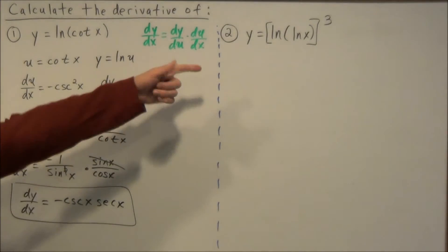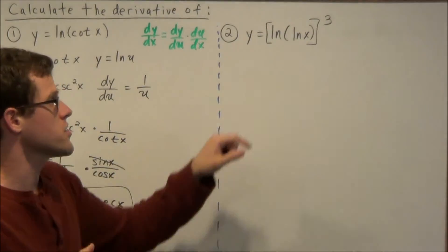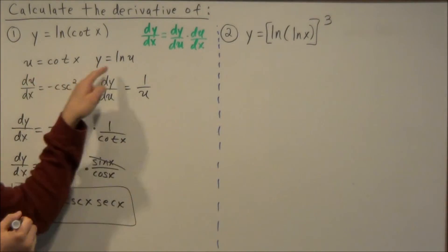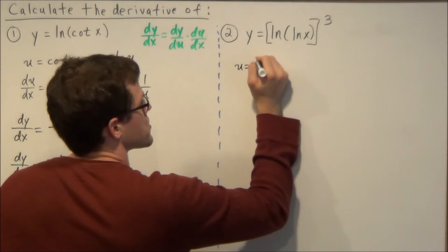For this second example it's going to be a little bit more involved because we have a composition of three functions here. So if we use this method of substitution, we define u to be the innermost function, natural log x.